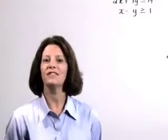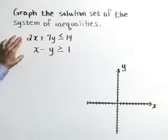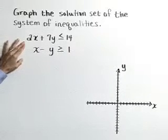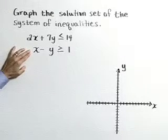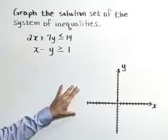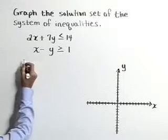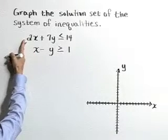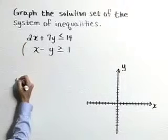Graph the solution set of the system of inequalities. Our inequalities are 2x plus 7y is less than or equal to 14, and x minus y is greater than or equal to 1. The solution to this system is going to be a region in our xy plane. Let's begin by graphing the boundary line for the inequality 2x plus 7y is less than or equal to 14.